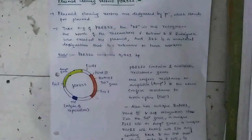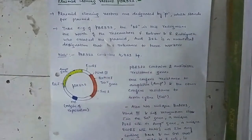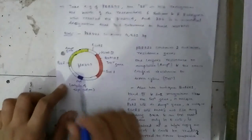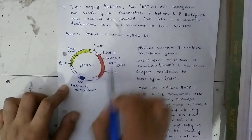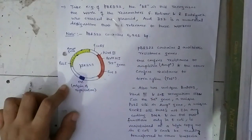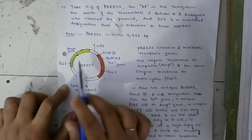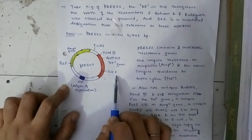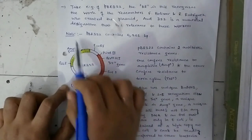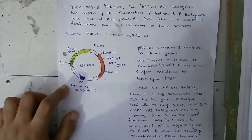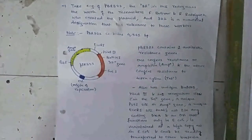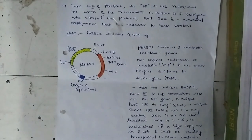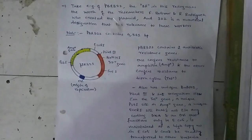PBR322 contains 4361 base pairs and has two antibiotic resistant genes: a tetracycline resistance gene and an ampicillin resistance gene. In the tetracycline gene, there are unique BamH1, Sal1, and HindIII restriction sites. In the ampicillin gene, there is a PstI site. The ori sequence, from where replication initiates, functions only in E. coli, is maintained at a high copy number in E. coli, and cannot be readily transferred to other bacteria.